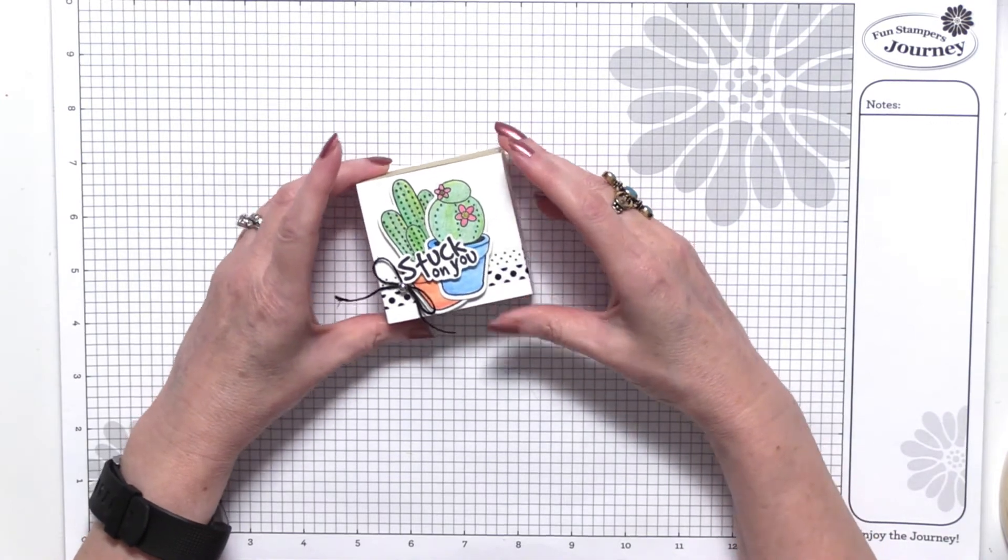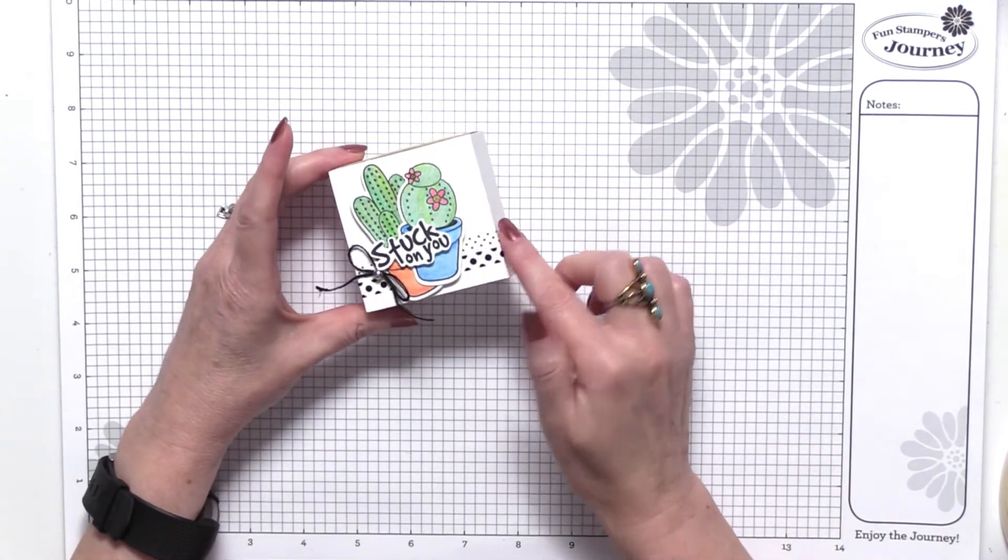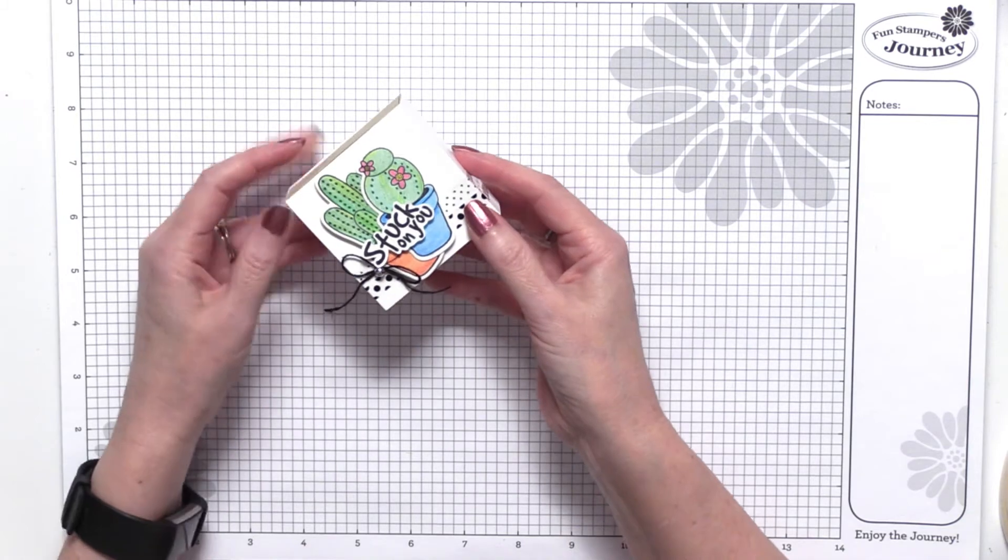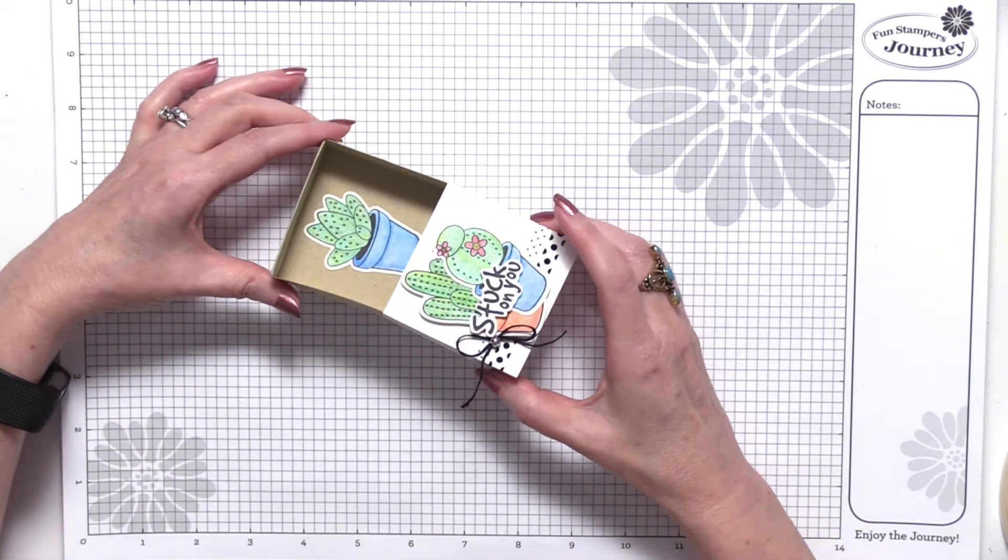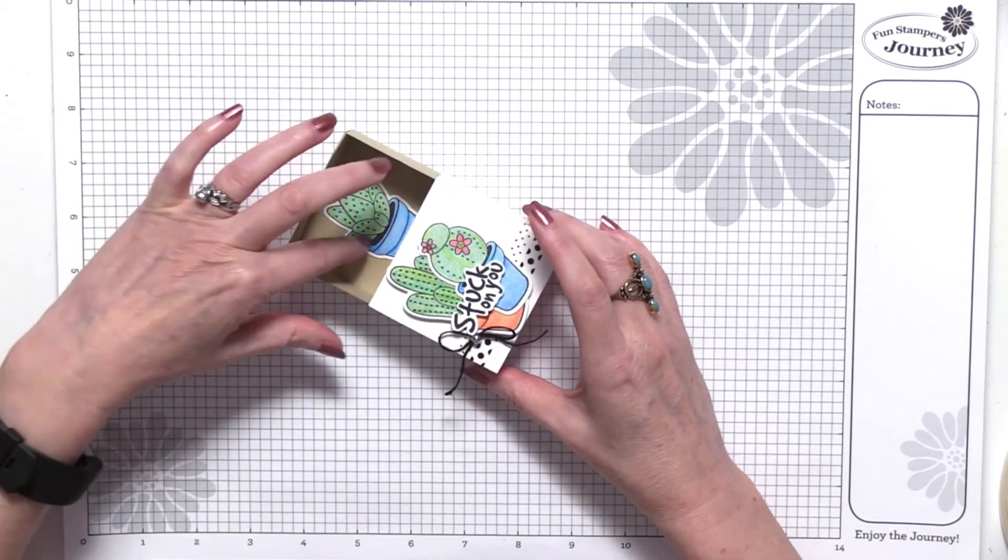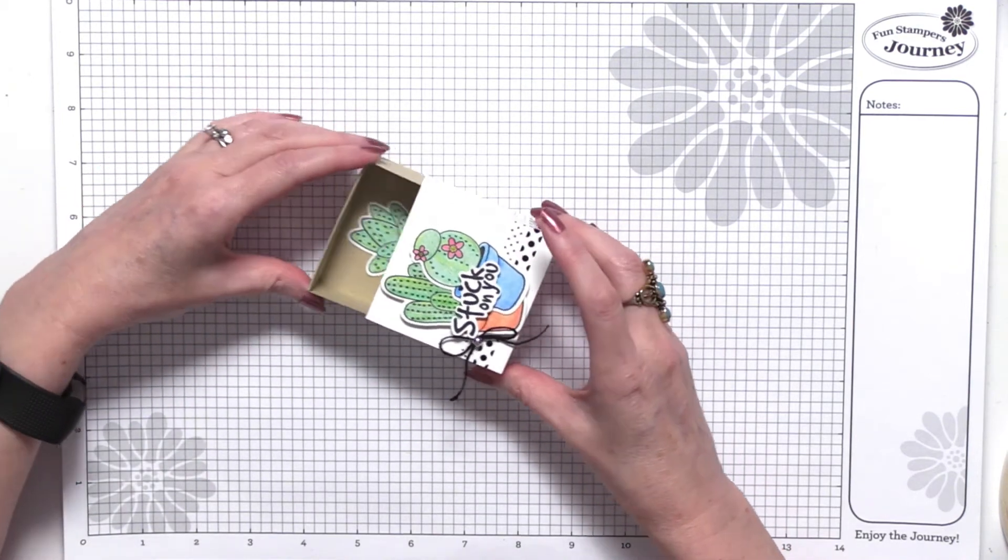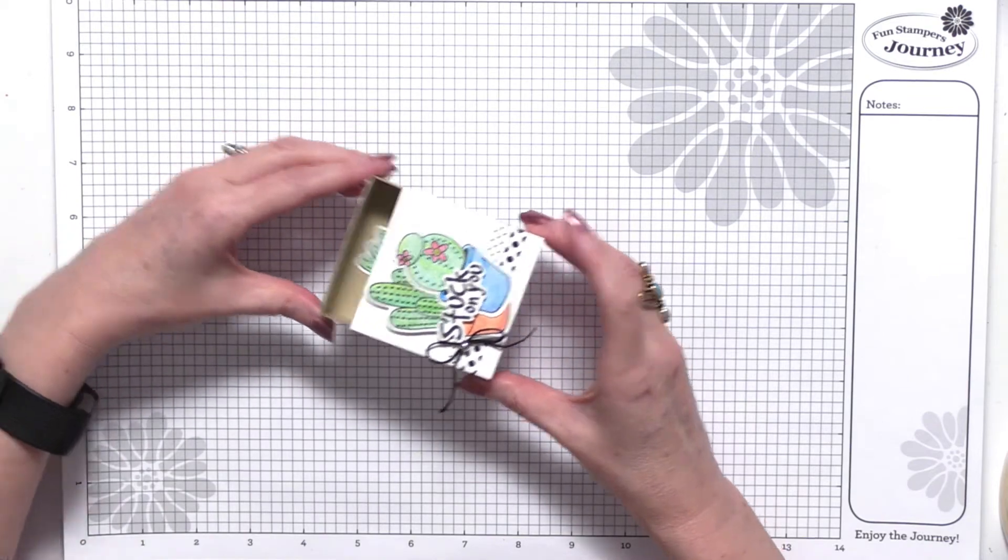Here is a little box that is just decorated with some washi tape, and when you slide it open, you can decorate the inside and have a little stamped image or maybe even a sentiment or something. So, this is really cute. You can put a nice little gift, a little goodie in there.